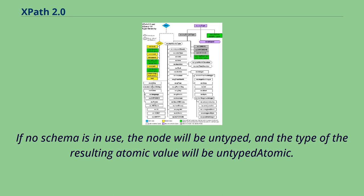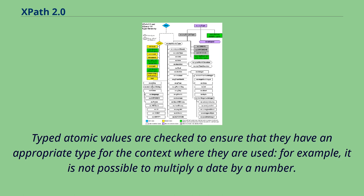If no schema is in use, the node will be untyped, and the type of the resulting atomic value will be untyped atomic. Typed atomic values are checked to ensure that they have an appropriate type for the context where they are used.